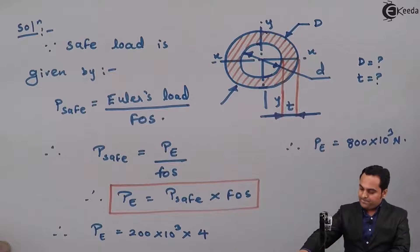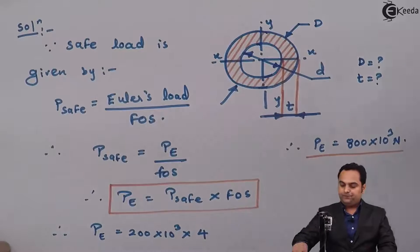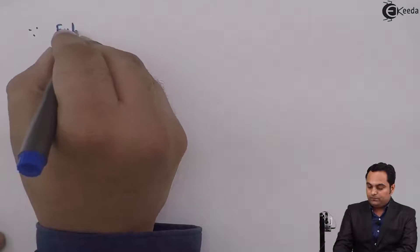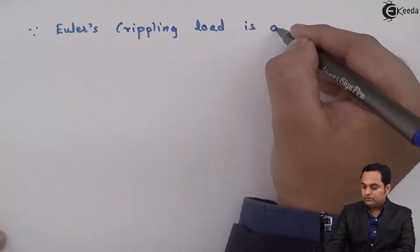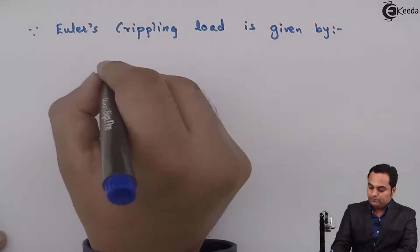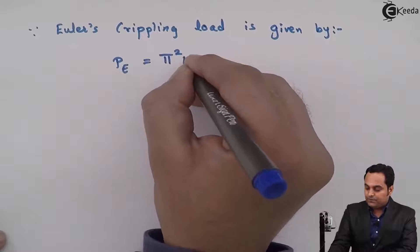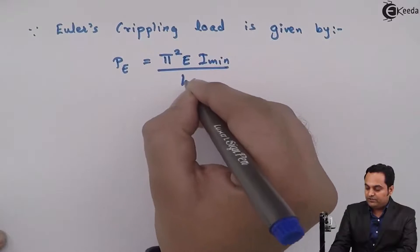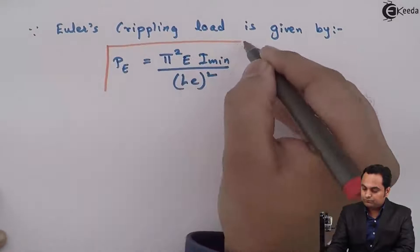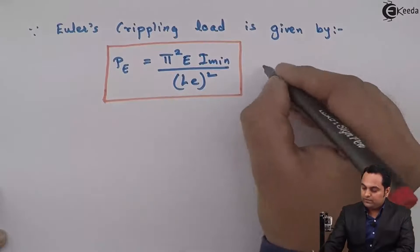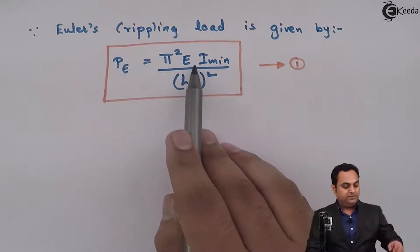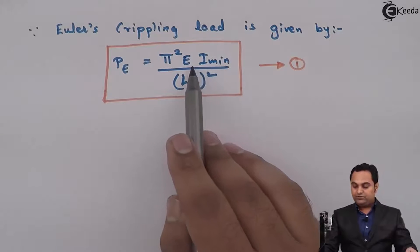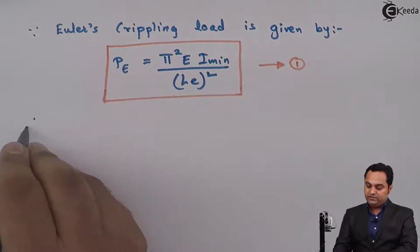Now I will write the formula of Euler's crippling load. Euler's crippling load P_E is equal to π²EI_min divided by effective length squared. I'll keep this as equation number one. π is a constant, E is given as 2×10⁵, and the only unknown is I_min.